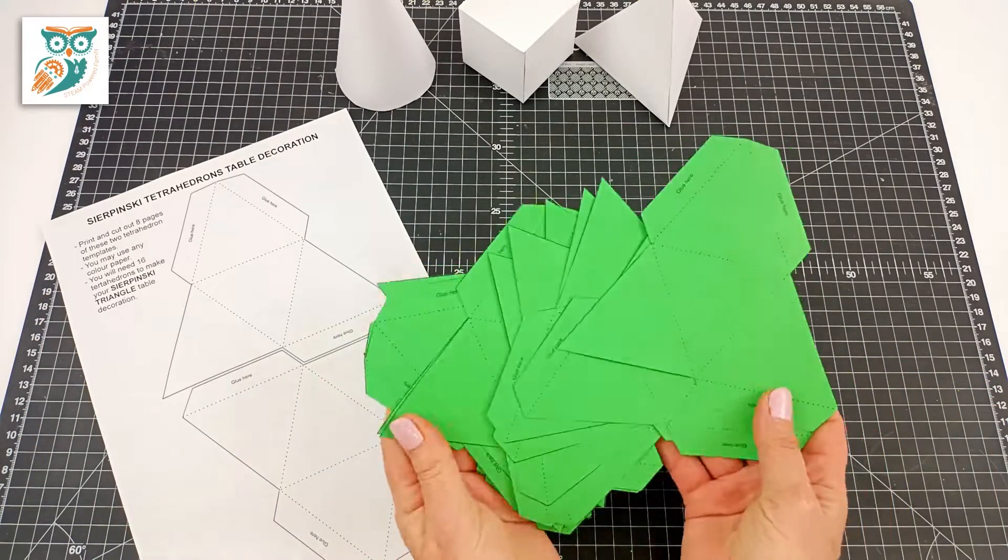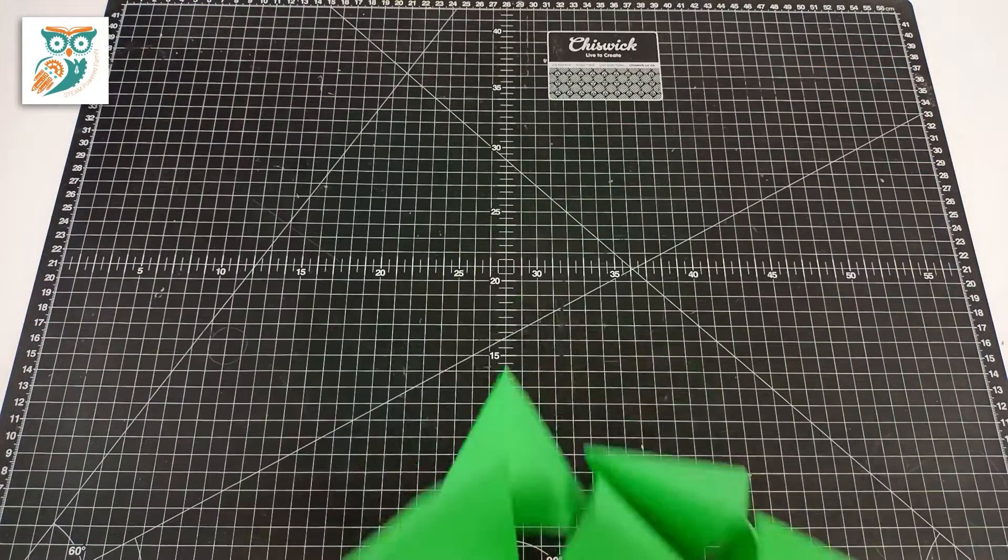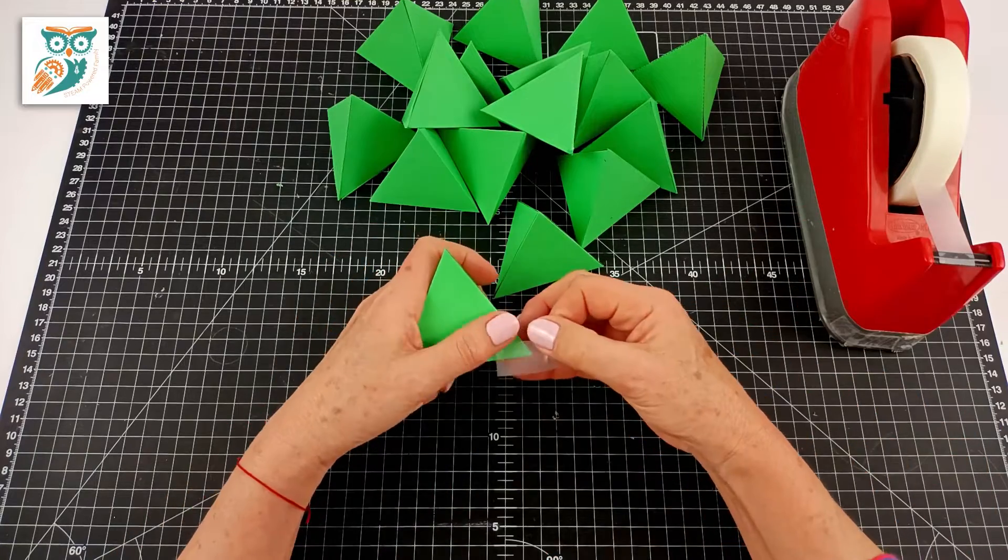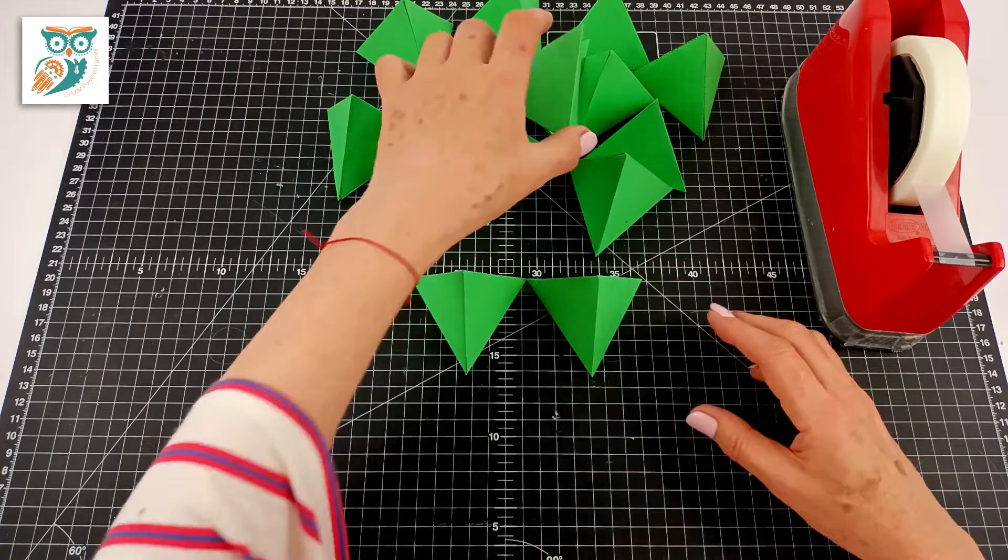Now we're going to make a Sierpinski Christmas tree and you're going to use 16 tetrahedrons or triangular pyramids. So this is a great project for your kids to do as a team or a group.